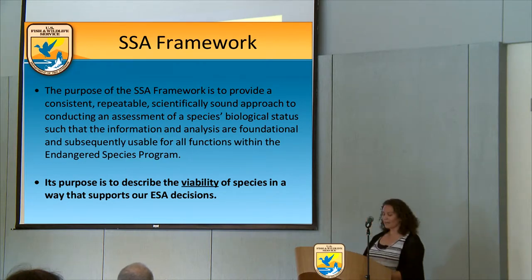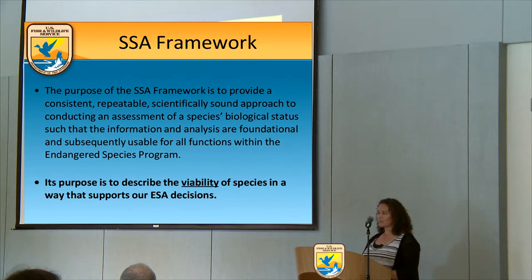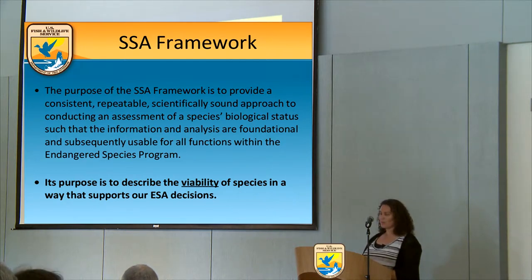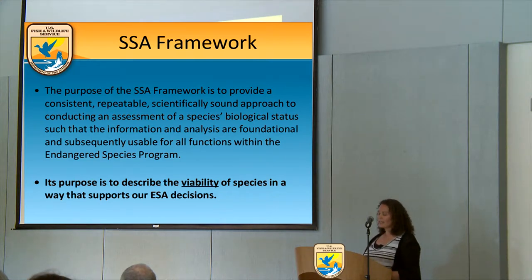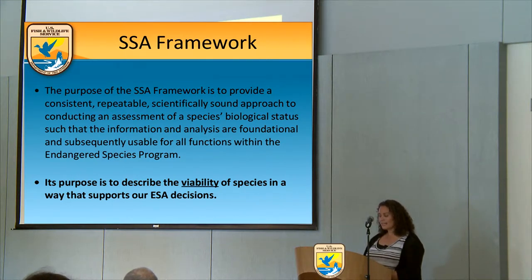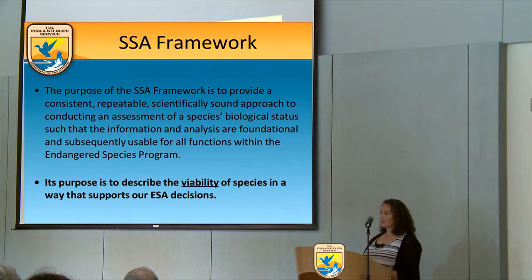The goal of the SSA framework is to provide a consistent, repeatable, scientifically sound approach to conducting an assessment of a species' status, staying away from policy decisions or interpretations beyond science. It provides a summary of the species' life histories, needs, biological requirements, and threats. We also consider the current and future availability of those needs and the reasons why those needs may be missing — essentially what threats are out there and what we need to improve upon to recover the species. This process requires a lot of input from states and other partners.